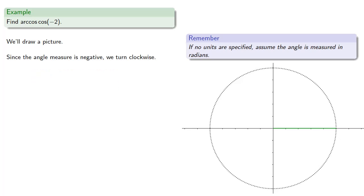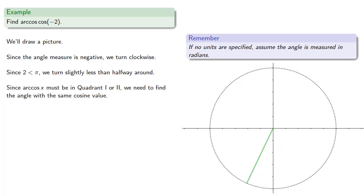Since two is less than pi, we're going to turn slightly less than halfway around. Now since arc cosine x must be in quadrant one or two, we need to find the angle with the same cosine value. That's our x coordinate, so this is going to be a reflection across the x axis.